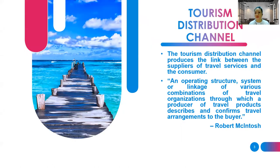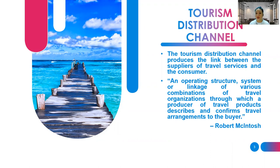First, let us define the distribution channel. A distribution channel is a chain of intermediaries which distribute the product from the supplier through different channels until it reaches the final consumer. According to Robert McIntosh, it is an operating structure, system, or linkage of various combinations of travel organizations through which a producer of travel products describes and confirms travel arrangements to the buyer.